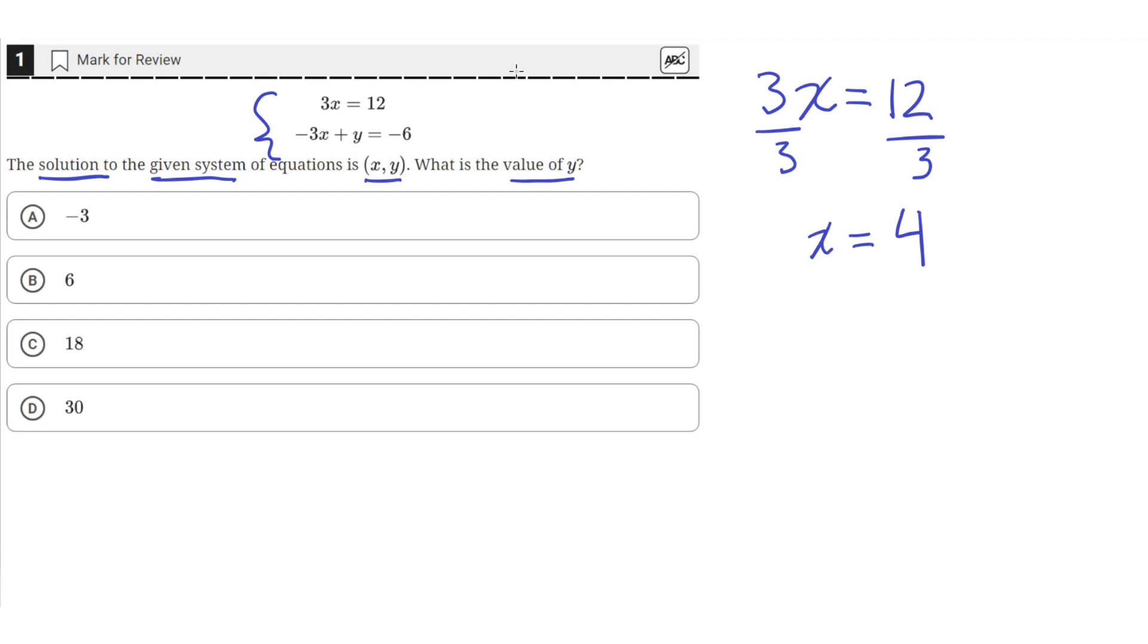So the value of x is 4, and we can plug that into the second equation to solve for y. So in the second equation, negative 3 times 4, the value of x is just 4 now, plus y, which is what we're going to solve for. And it equals negative 6.